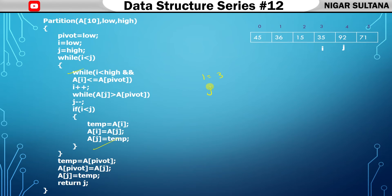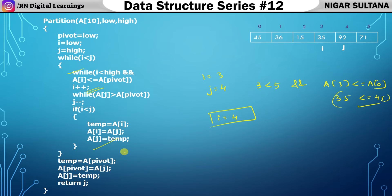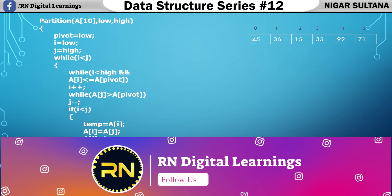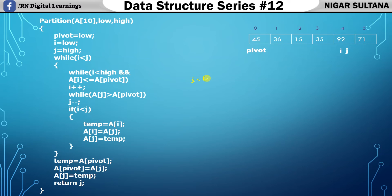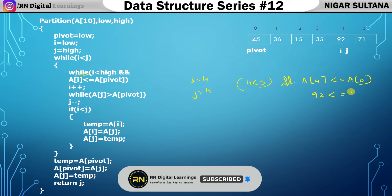Now i=3, j=4. Run the while loop again: is 3 less than 5 and a[3]=35 less than or equal to a[pivot]=45? Both true — increment i. I becomes four. Now both i and j point to position four. Check again: is a[4]=92 less than or equal to 45? This is false, so stop incrementing.